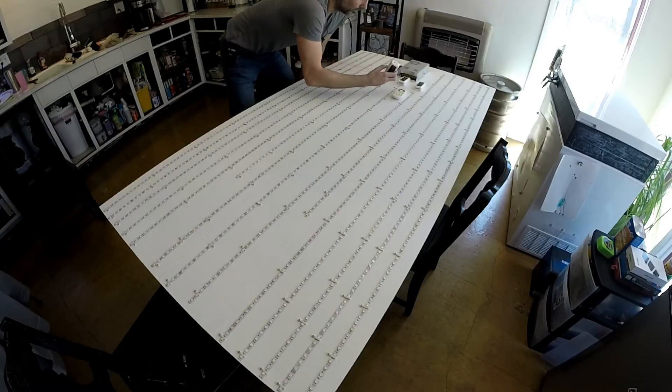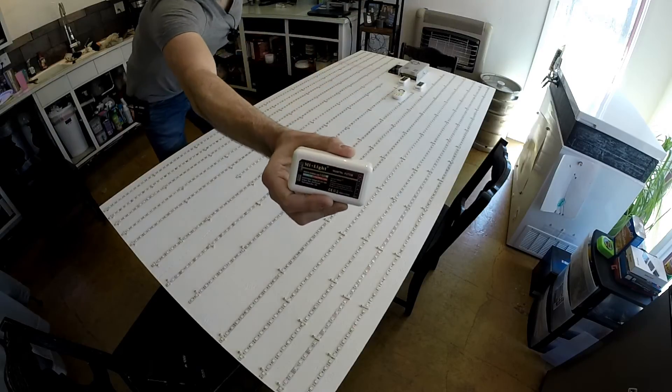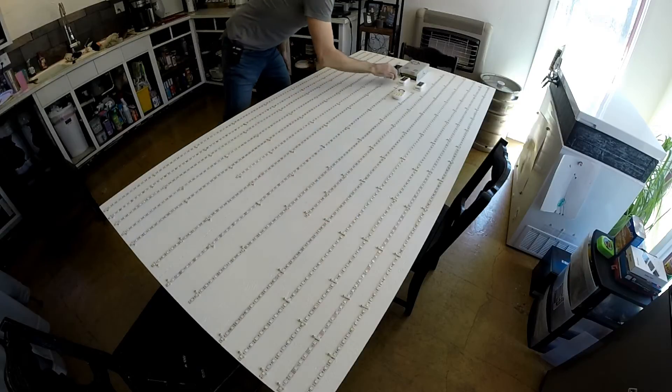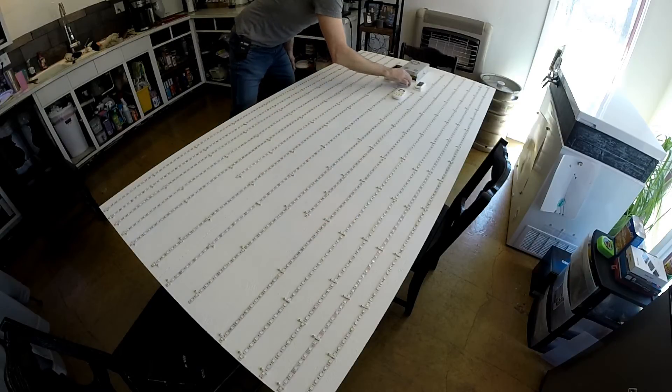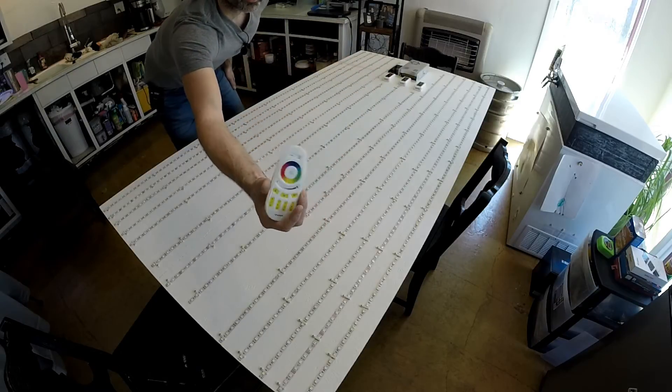Now, I have some of these MyLights. Let me get these closer in frame here. Some of these MyLight controllers. They're 2.4 gigahertz RS. It's going to be really cool. I'll be able to, in this controller, we'll go through walls if you need it to. Three zones.